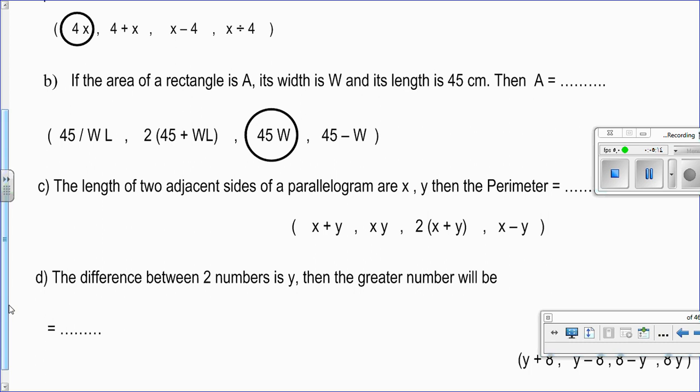Question C. The length of two adjacent sides of the parallelogram are x and y. So the perimeter will be what? We know the perimeter of the parallelogram equals length plus width multiplied by 2. The two sides are x and y. I'll make x plus y multiplied by 2, which is 2 times (x plus y).